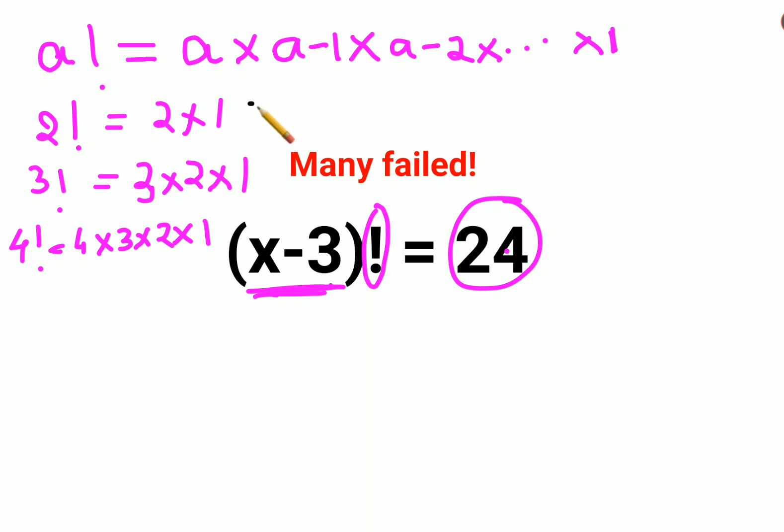So here, 2 factorial is 2, 3 factorial is 6, and 4 factorial is 24.